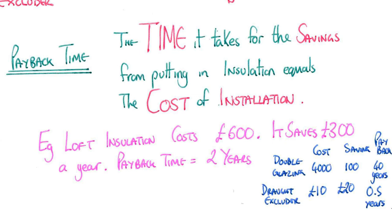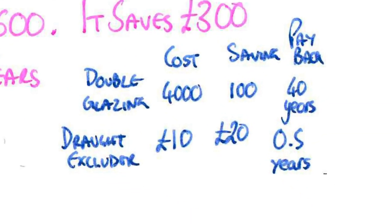I've got some other examples. Double glazing, for example, is notorious for not having a very long payback time—about 40 years. Draft excluders pay back themselves very quickly because they're very cheap.